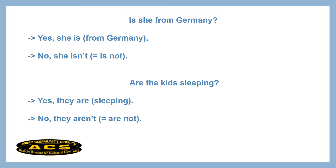My answer could be: Yes, she is. I don't have to say 'from Germany' again. Or if it's negated, I could say: No, she isn't. 'Isn't' is a contraction of 'is' and 'not.'